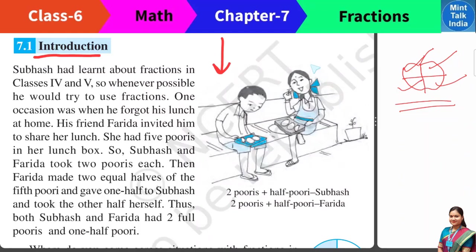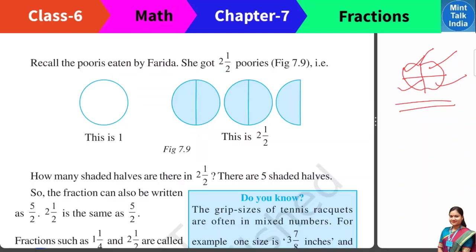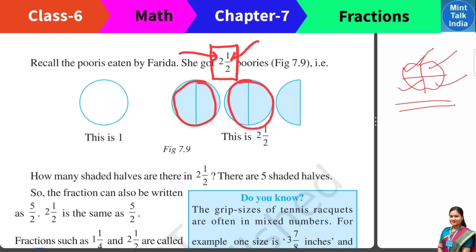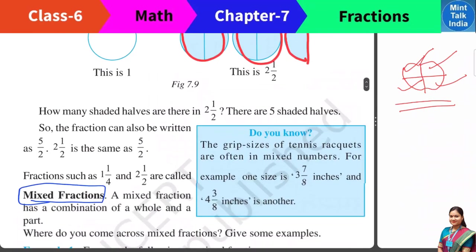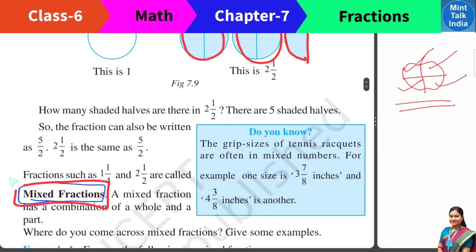Do you remember? In the beginning of the chapter, Faridha had 2 poories plus half poories. So what does 2 and a half mean? Here, the number 2 means 2 whole chapatis, and on the right side the fractional portion is 1 by 2 — 1 by 2 is nothing but half of the chapati. This type of thing, which has a whole part and a fractional part, we call it a mixed fraction.